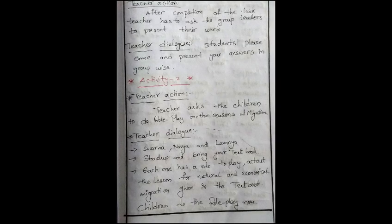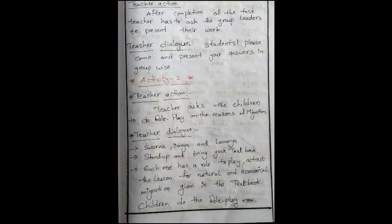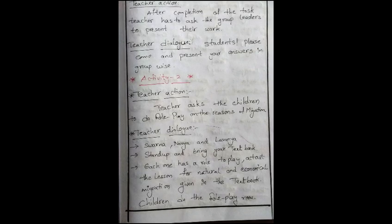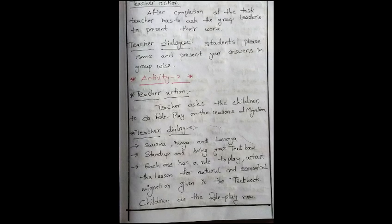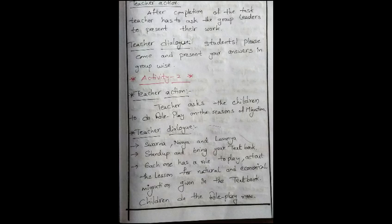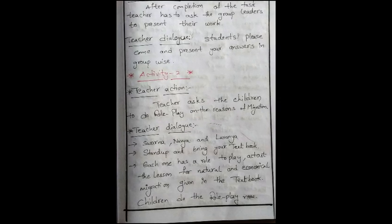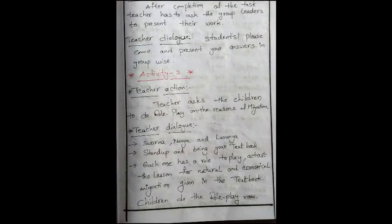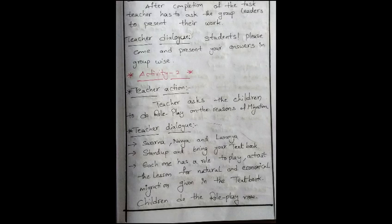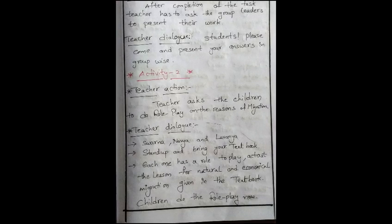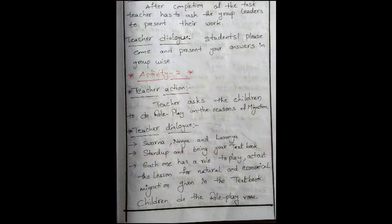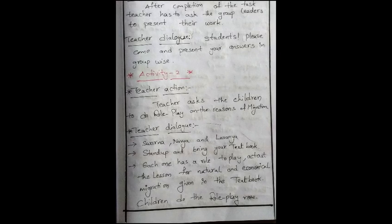Activity 2. Teacher action: teacher asks the children to do role play on the reasons of migration. Teacher dialogue: Swarna, Navya and Lavanya, stand up and bring your text book. Each one has a role to play. Act out the lesson for natural and economical migration given in the text book. Children do the role play now.